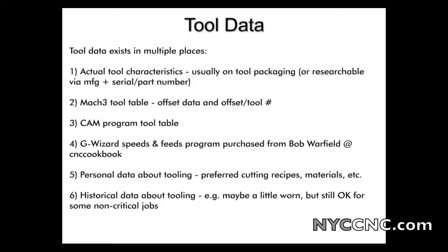The fifth one is personal information about tooling — perhaps related to number four. This would be things like what you have found the best recipes to be. G-Wizard is a great piece of software, but depending on your mill and your personal preferences, you'll probably change that. Personal data might include limiting a certain type of end mill to a certain type of material. And lastly, number six would be some information about this specific tool — perhaps one is worn but still okay, but you want to make sure you don't use it on a critical job.